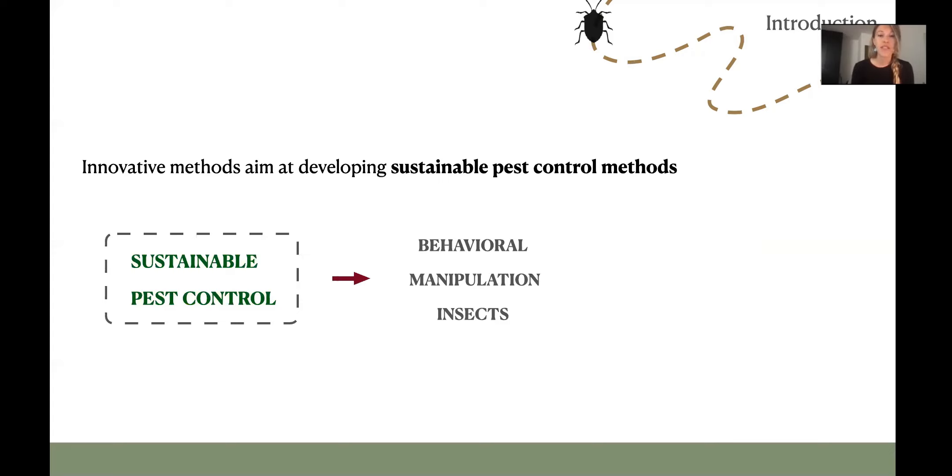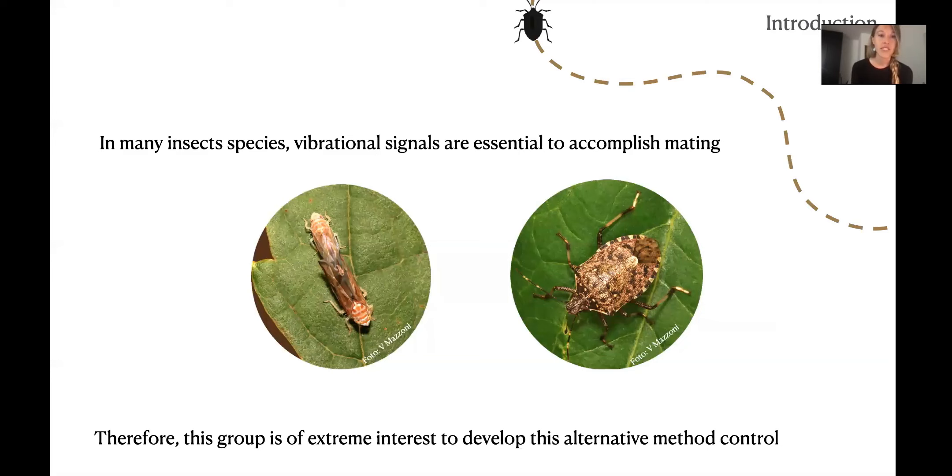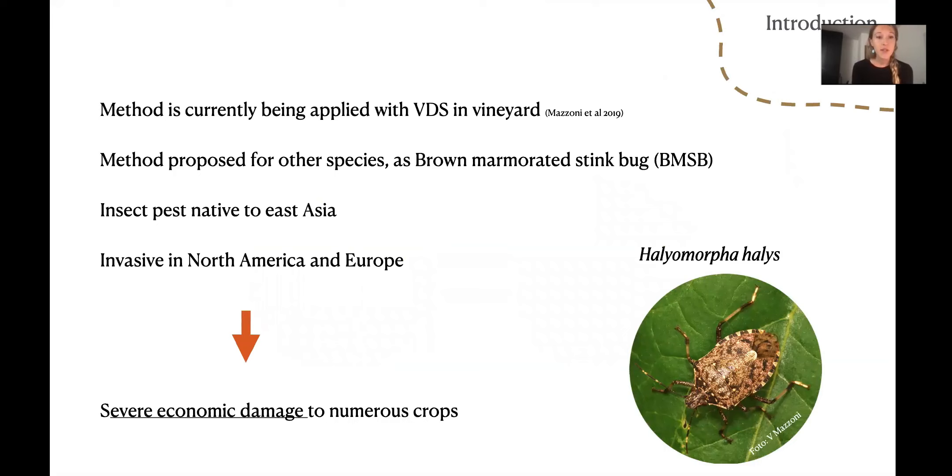Thus, alternative methods to control insect pests are needed to minimize these risks. Innovative methods aim at developing sustainable pest control by means of behavioral manipulation of insects, for instance using pheromones or more recently vibration, the usage of vibrational signals. In many insect species, vibrational signals are essential to accomplish mating, including leafhoppers, planthoppers, and stink bugs.